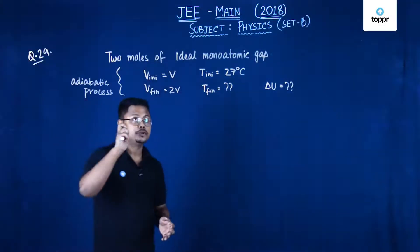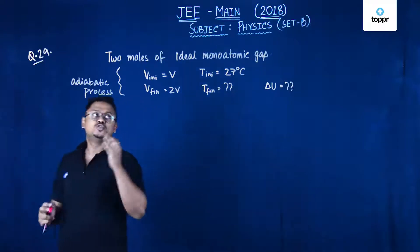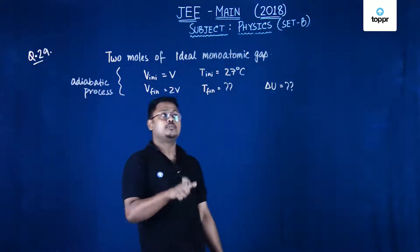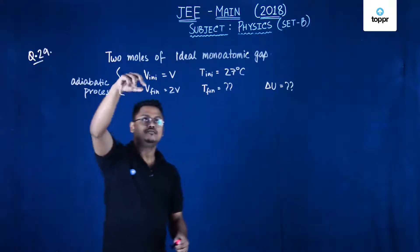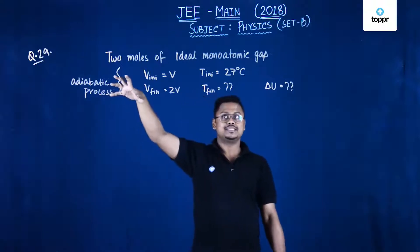Now we look at problem number 29. It's a pretty simple problem. In this problem, it's given that two moles of ideal monoatomic gas where the initial volume is V, the final volume is twice the initial volume in an adiabatic process.